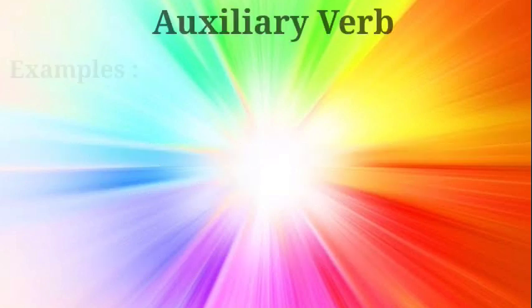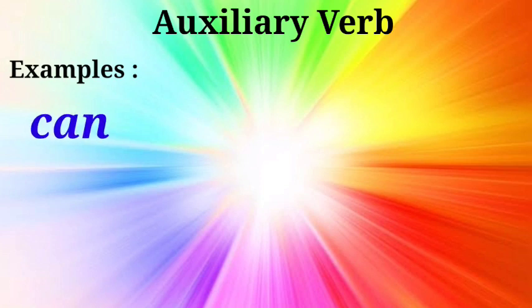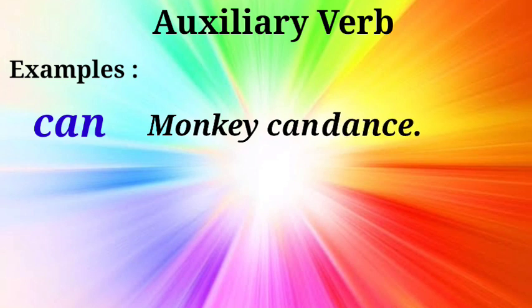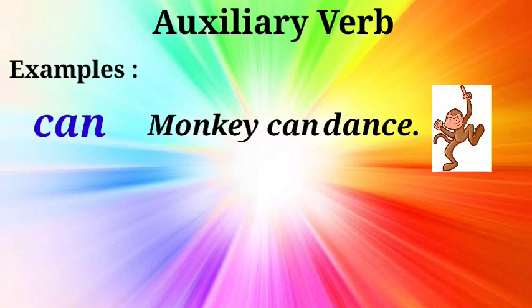Let us take the example. Can. Can is a helping verb. If we write monkey can, this is an incomplete sentence. It does not make any sense because monkey can, but monkey can what? To make it complete, we add a main verb, that is dance. It will be monkey can dance. And in this way, it gives meaning to the sentence.